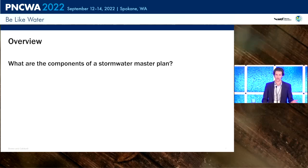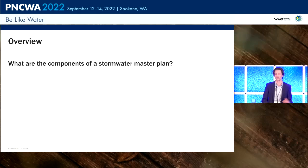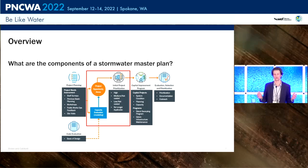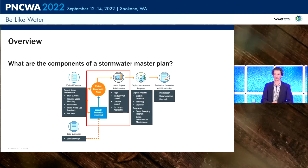A little background on Stormwater Master Plans: a master plan is a long, multi-year process involving financial analysis, staffing, maintenance, capacity modeling, and water quality modeling. What we're talking about today is a tool to assist with just one part of that whole master planning process — specifically the capacity modeling, identifying project opportunity areas, and moving forward into capital project development.